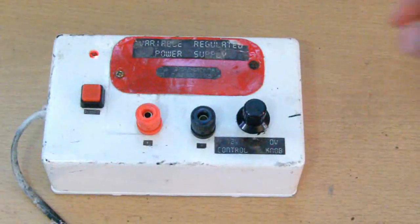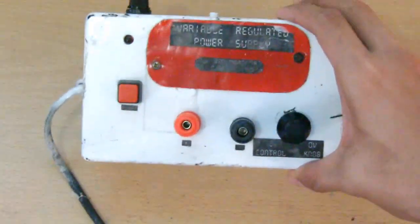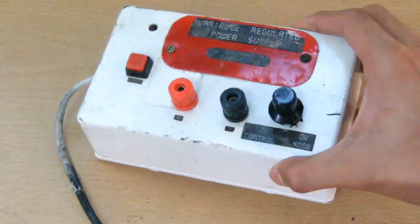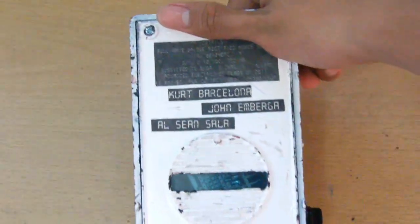This is a 0-12 volts Zener diode regulated power supply. It can deliver 750 mA of current. It's made by me and funded by my groupmates.